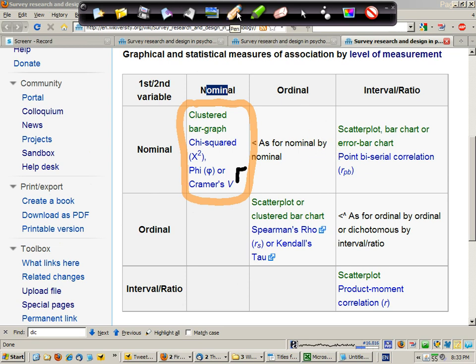Our next option is ordinal-by-nominal data. There's no special statistics for that, so we can treat ordinal-by-nominal data as nominal-by-nominal data. Remember, you can always go down a level of measurement, but you cannot go up a level of measurement.